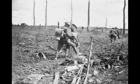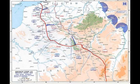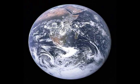Rearguard actions were fought during the pursuit: the Battle of Courtrai, the Battle of Mont d'Origny, the Battle of the Selle, the Battle of the Lys and Escaut, the Battle of the Serre, the Battle of Valenciennes, the Battle of the Sambre, the Battle of Thirak, and the passage of the Grand Honnelle — with fighting continuing until the last minutes before the armistice took effect at 11 o'clock on 11 November 1918. The last soldier to die was Henry Gunther, one minute before the armistice came into effect.